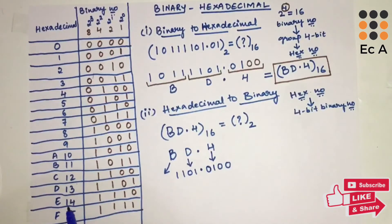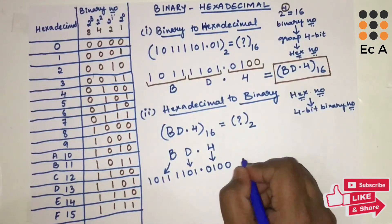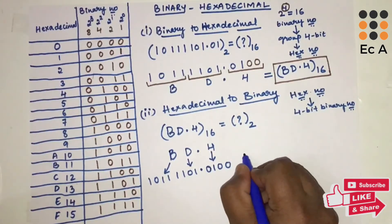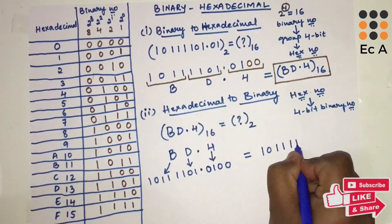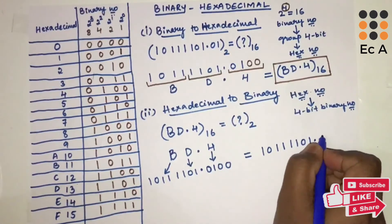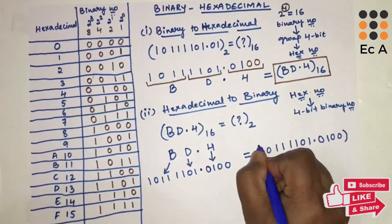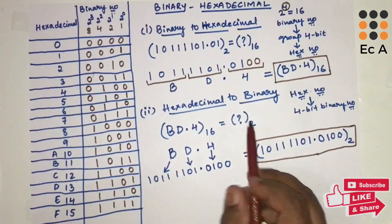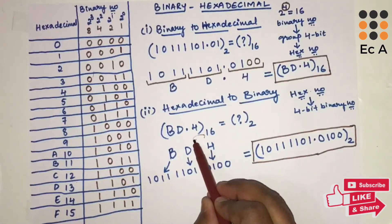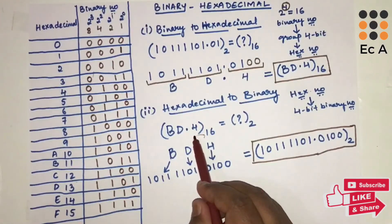For D the equivalent is 1101, and for B the equivalent is 1011. Writing them in order gives 1011 1101.0100₂. This is the binary equivalent of the given hexadecimal number. Hope you have understood the topic — thank you.